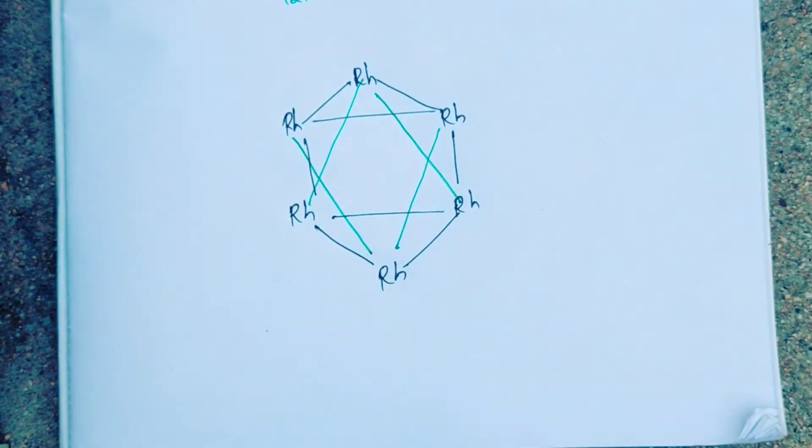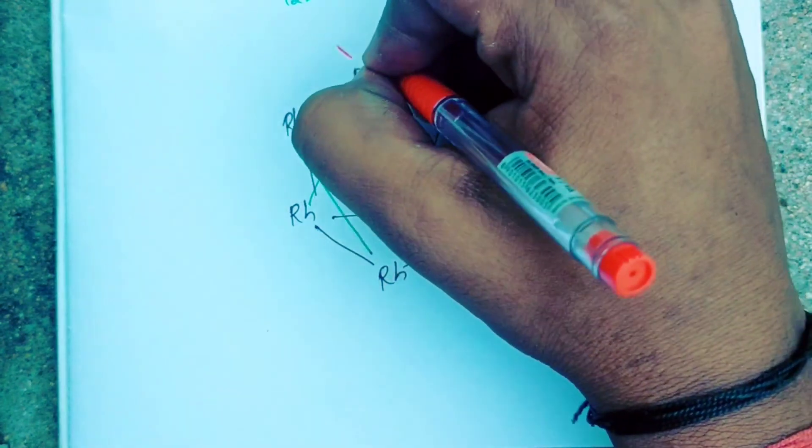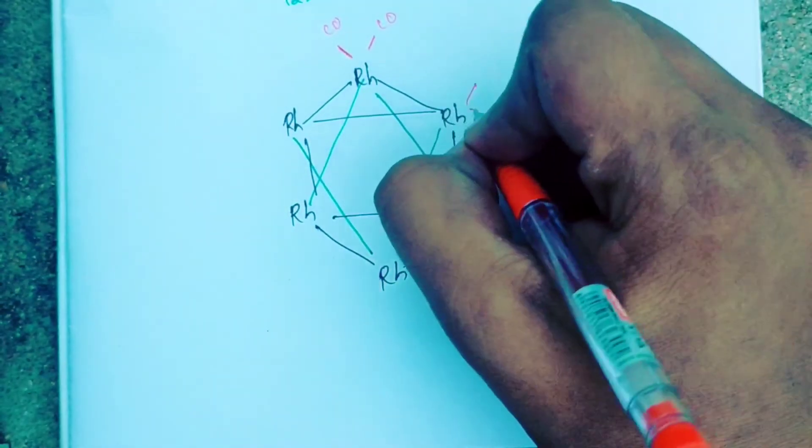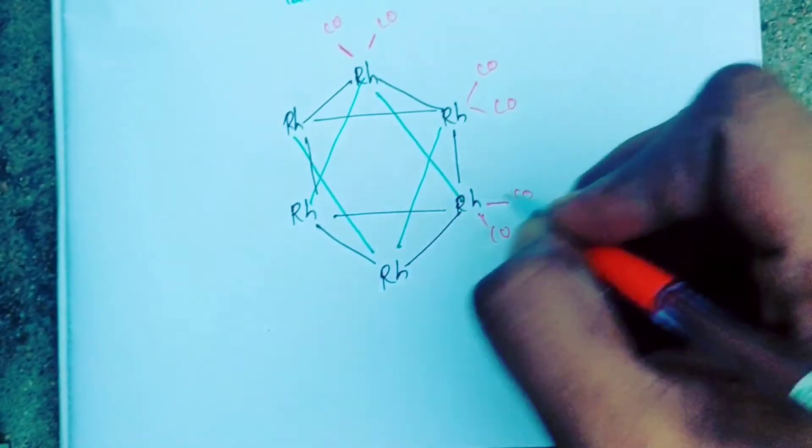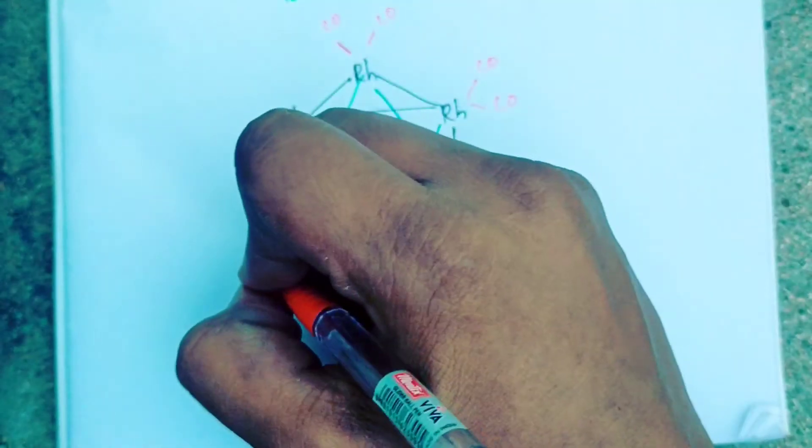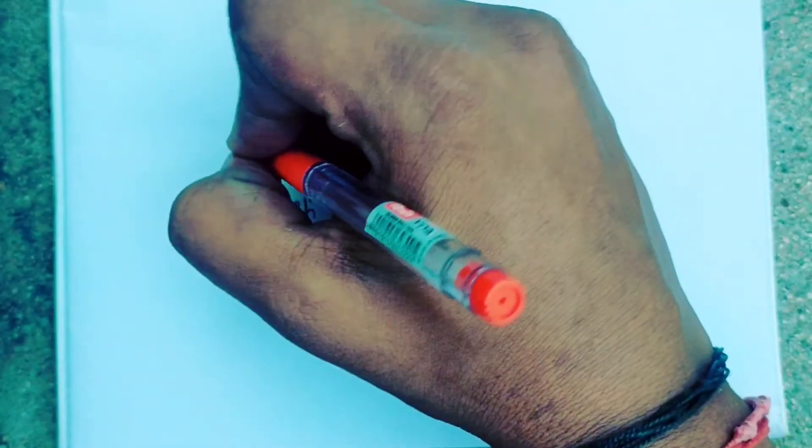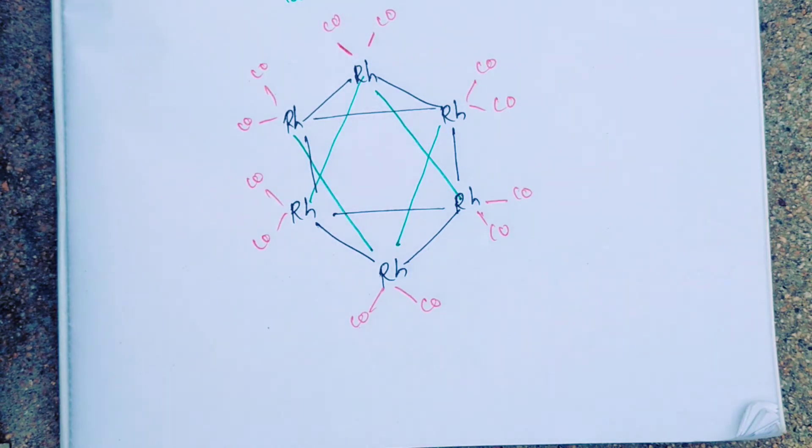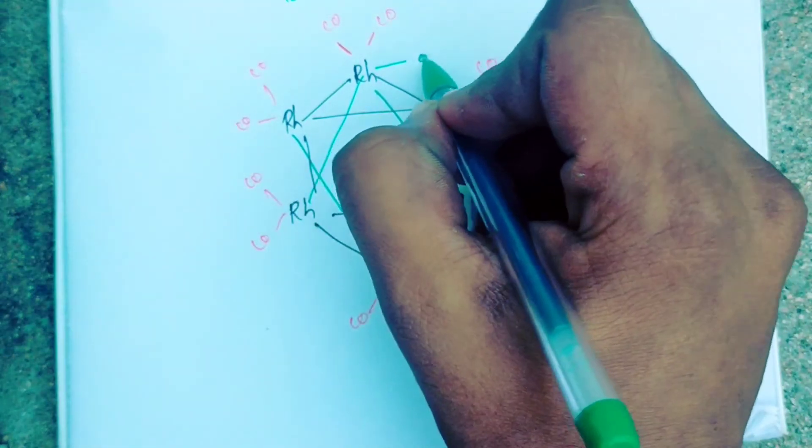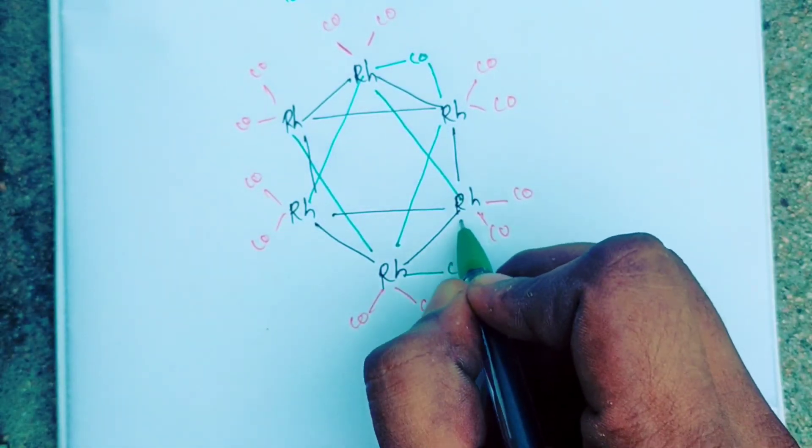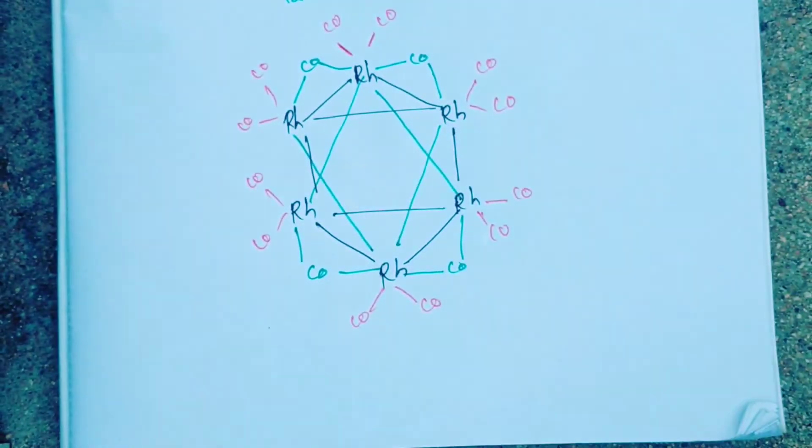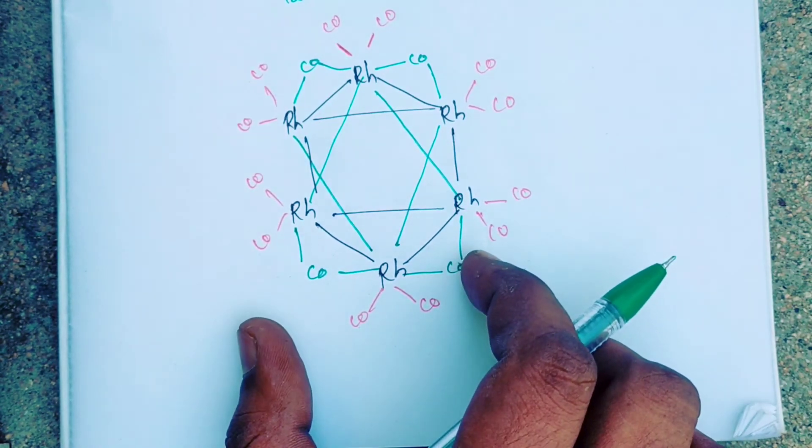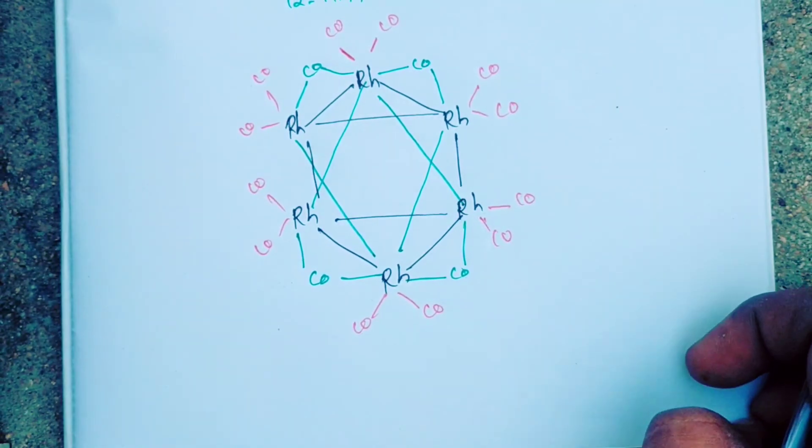So there are 12 metal-to-metal bonds. For carbonyls, each rhodium has 2 terminal carbonyl ligands. They also have 4 bridging carbonyls: 1, 2, 3, and 4. This is a kind of isomeric structure. I will send that material to our WhatsApp group.